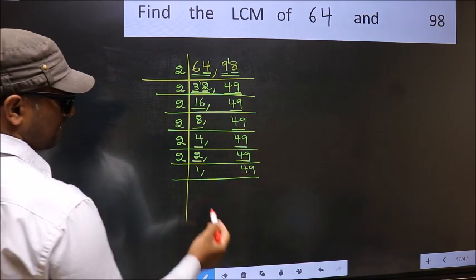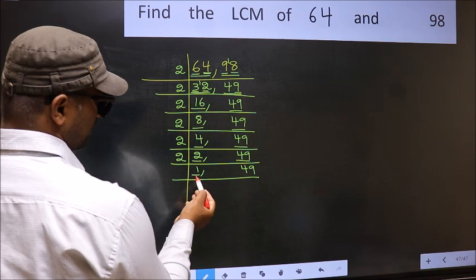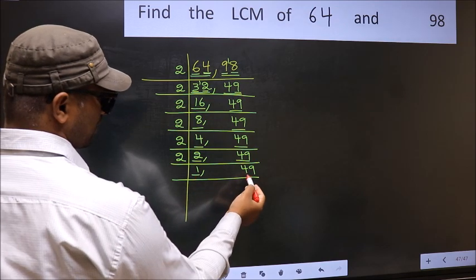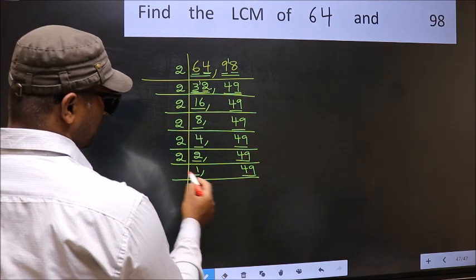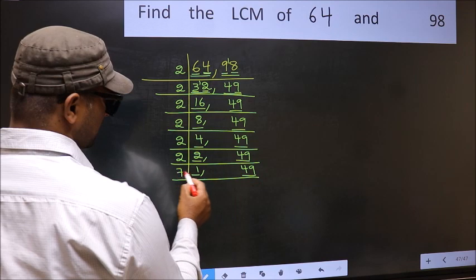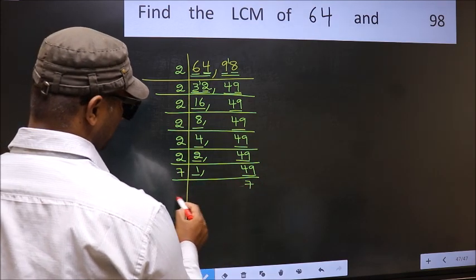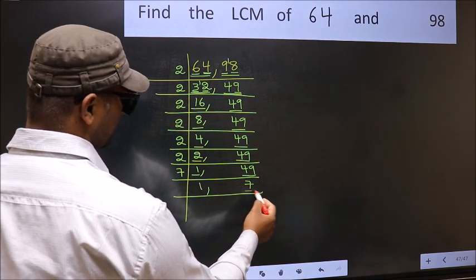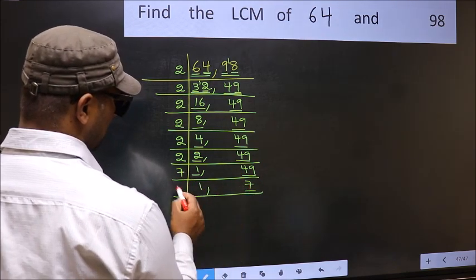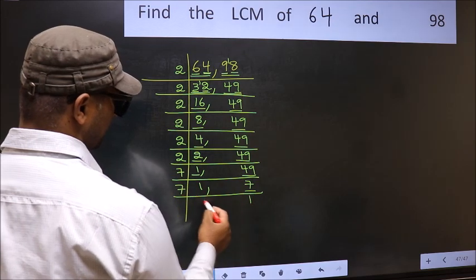Now we got 1 here, so focus on the other number, 49. 49 is 7 times 7. Now we have 7 — 7 is a prime number, so 7 times 1 is 7.